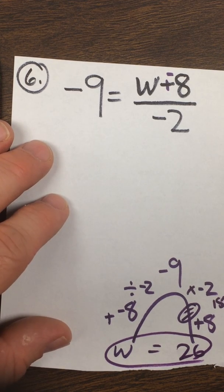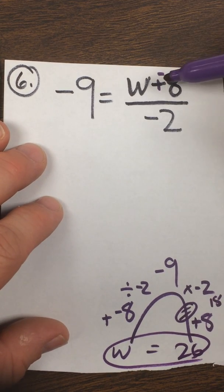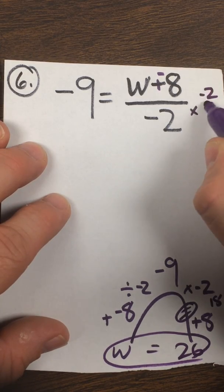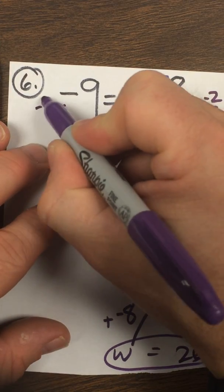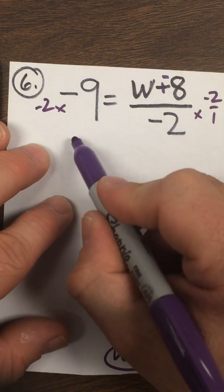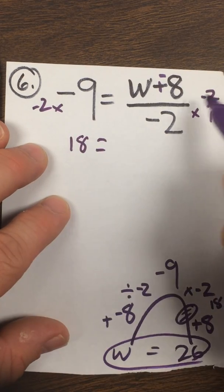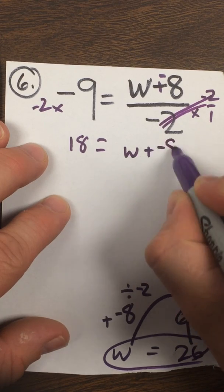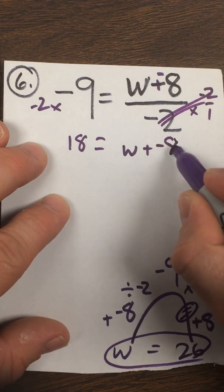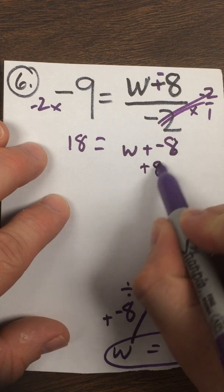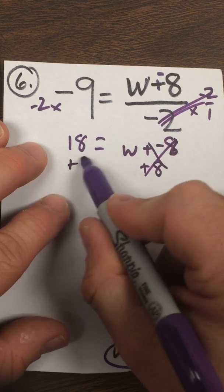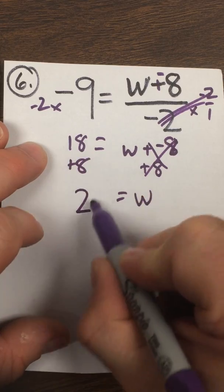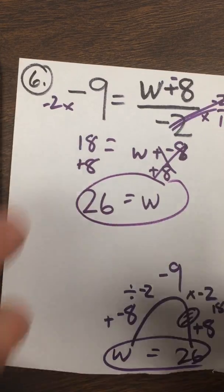If I did it with cancellation, I would still need to recognize they did this then this, so let me undo this. Take this times negative 2, and take this times negative 2. So now we're at 18 over here, and these cancel out, and you're left with w plus negative 8. So I add 8 to this side to get rid of that, and I add 8 to this side over here, and you're left with w equals 26. Same answer.